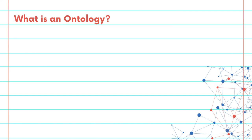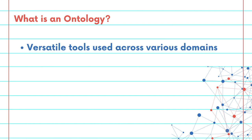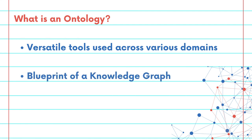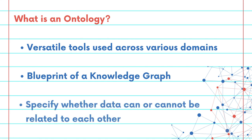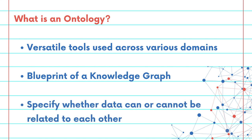Ontologies are versatile tools used across various domains. They can be perceived as the skeleton or blueprint of a knowledge graph. Essentially, they specify whether the data can or cannot be related to each other.